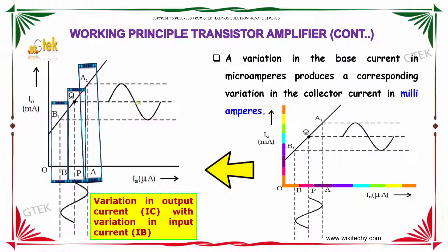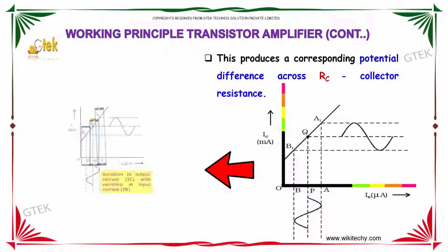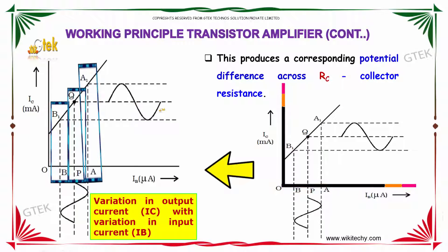A variation in the base current in microamperes produces a corresponding variation in the collector current in milliamperes. This produces a corresponding potential difference across RC, the collector resistance.